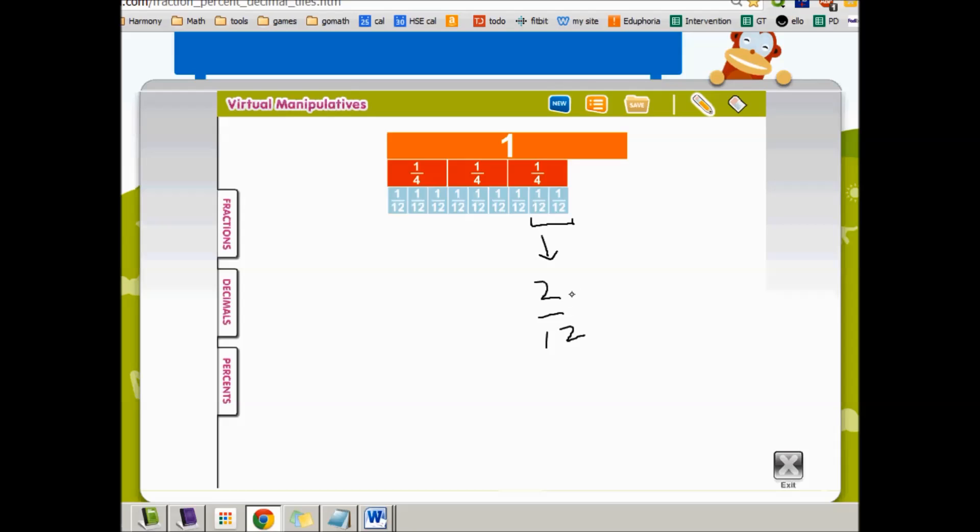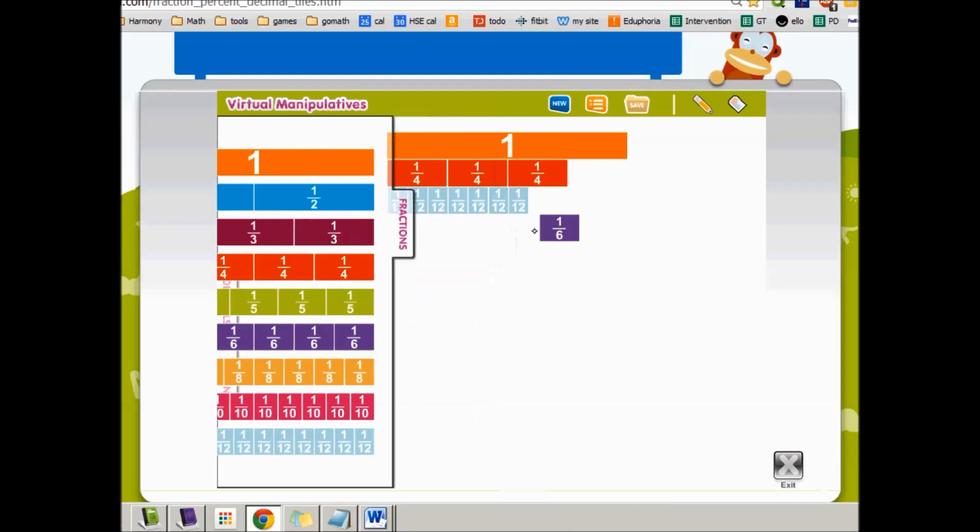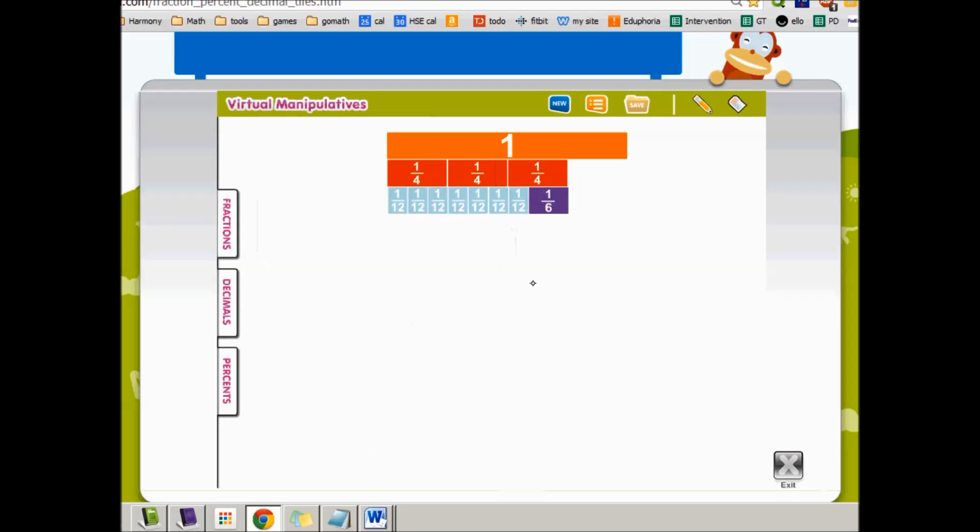Because the top and bottom of this fraction are even, I can still simplify this. And 1 sixth actually fits there perfectly. So it is simplified. Now it's 3 fourths minus 7 twelfths equals 1 sixth. And that is how you subtract using fraction strips.